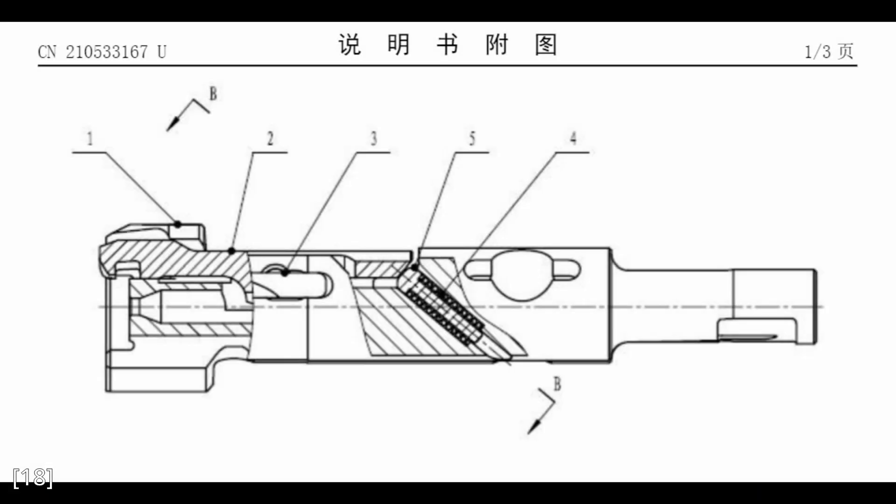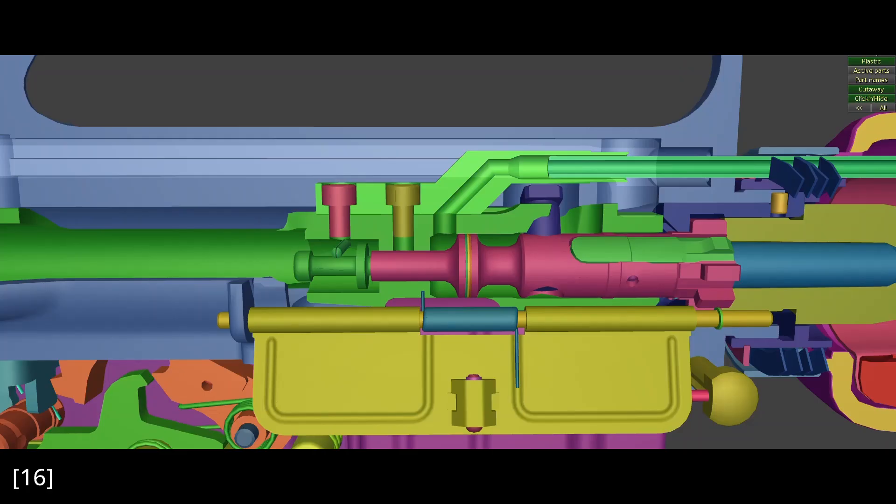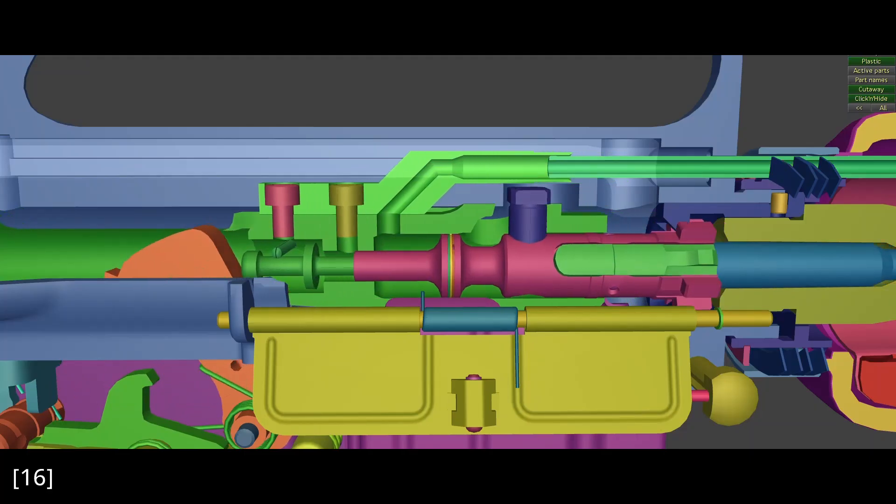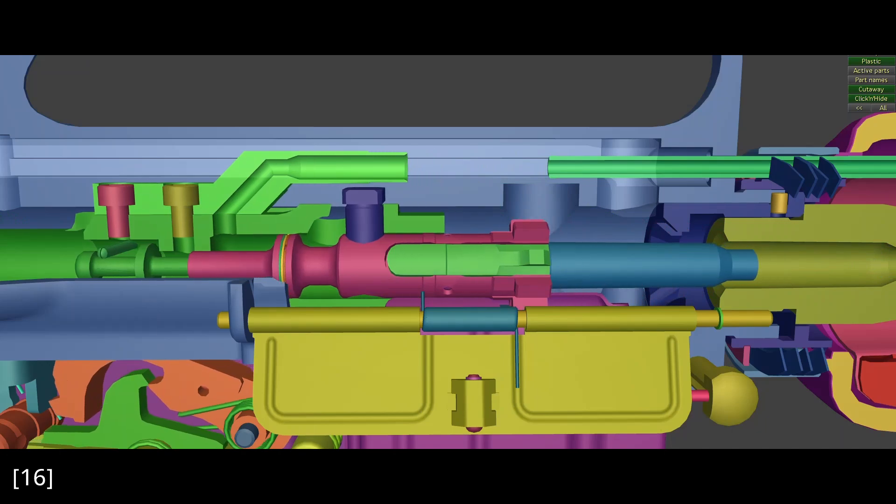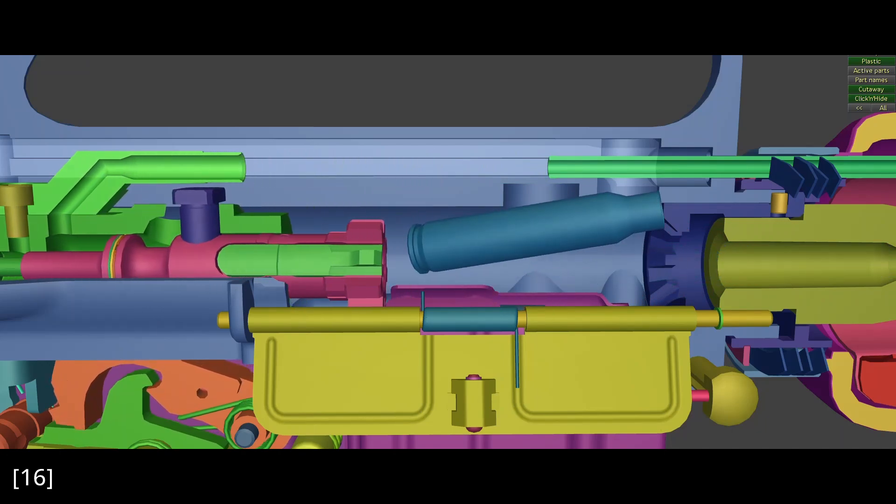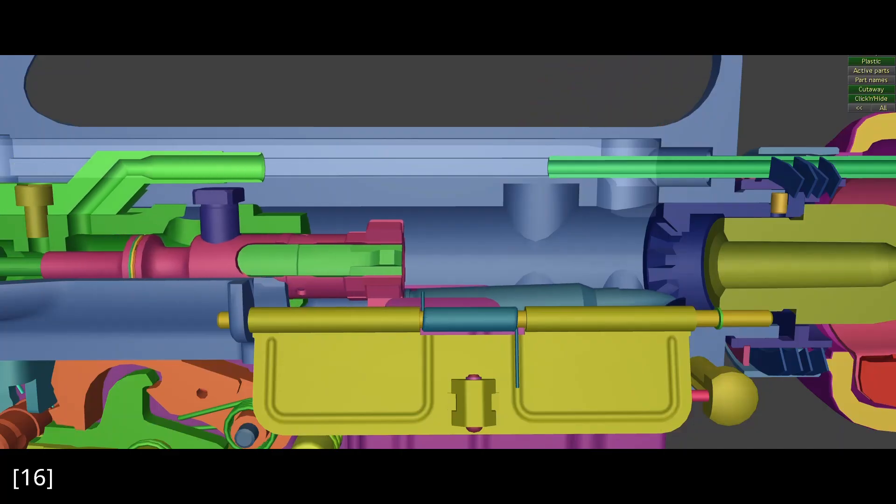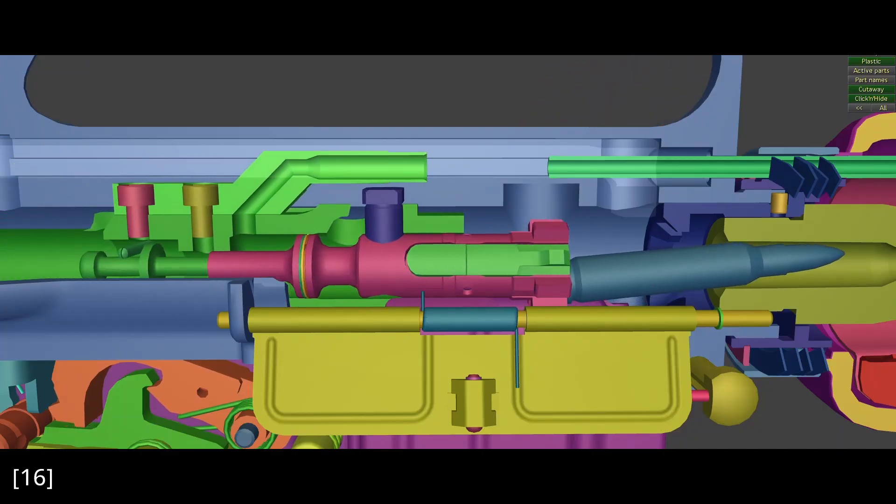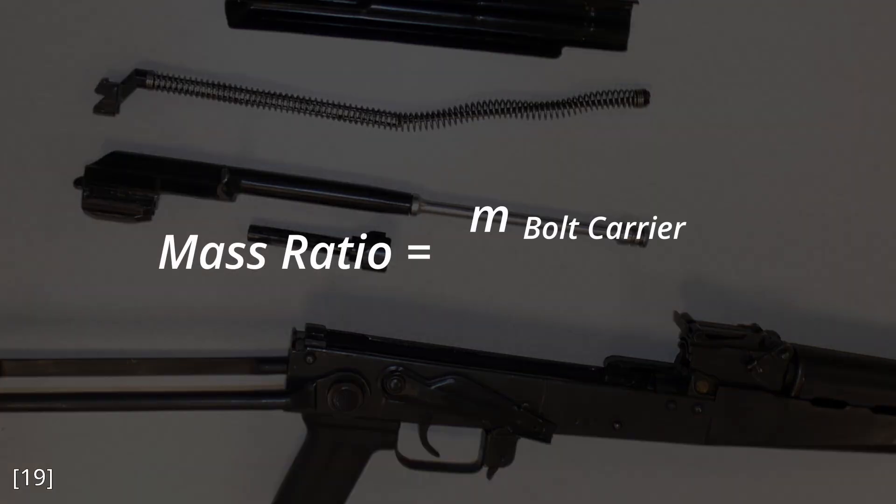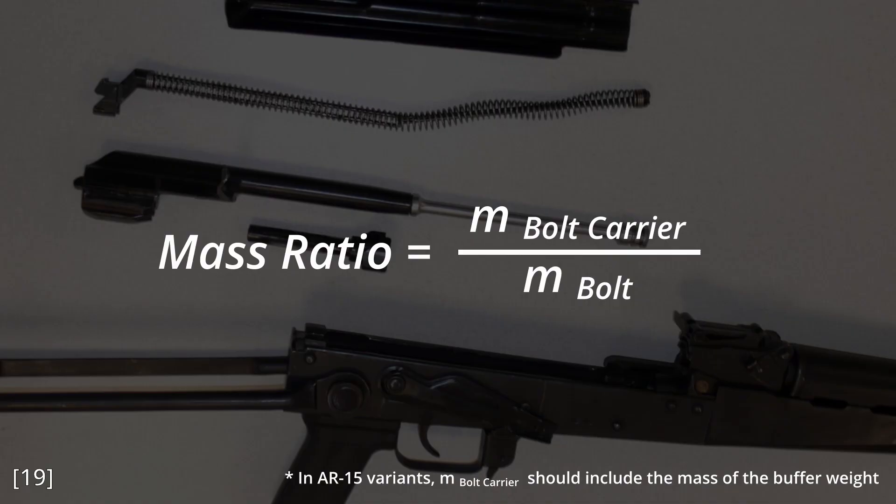Now that we're done with the trigger pack, let's talk about one interesting thing that a commenter has pointed out about the QBZ-191 bolt. Even though it is a piston gun, the bolt tail is still present. On the original DI AR-15, this bolt tail is necessary to prevent the high-pressure, high-temperature propellant gases from entering the firing pin channel, but this is not a concern on an external piston gun. The commenter also pointed out that on a lot of AR-18 derivatives, the bolt tail is deleted to improve the mass ratio of the bolt carrier group. Just FYI, the mass ratio is the mass of the bolt carrier divided by the mass of the bolt, and the higher the number the better, since the bolt carrier will have more inertia relative to the bolt, which means that it can close the bolt more easily.